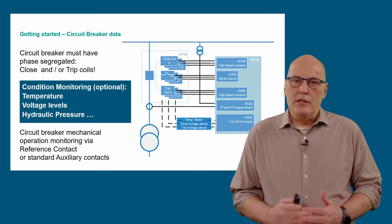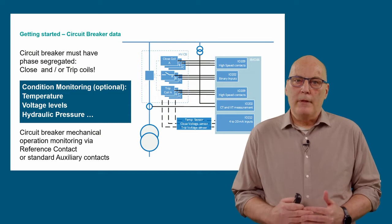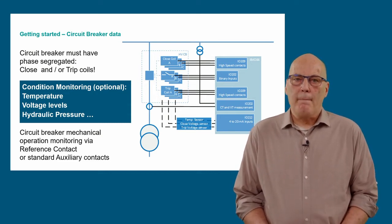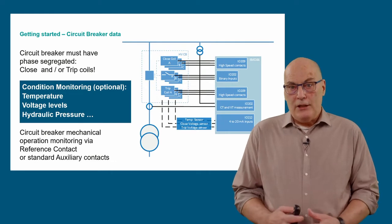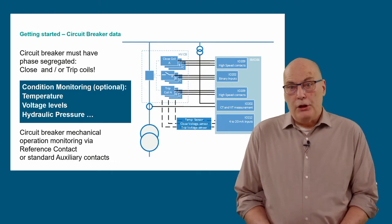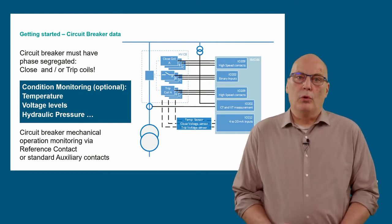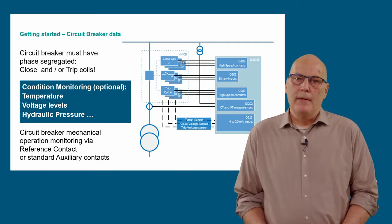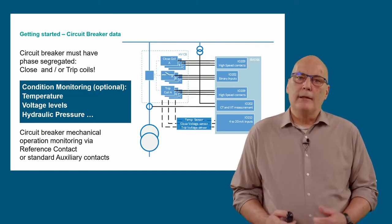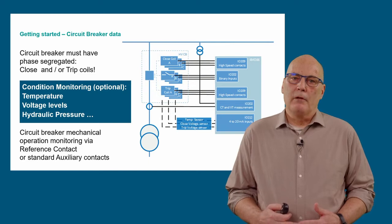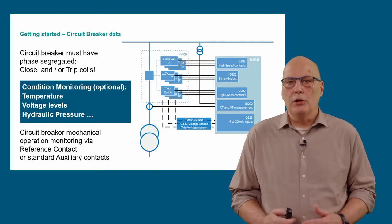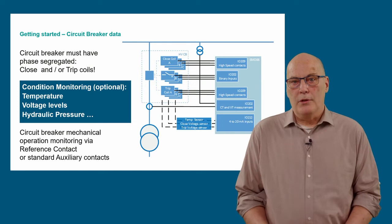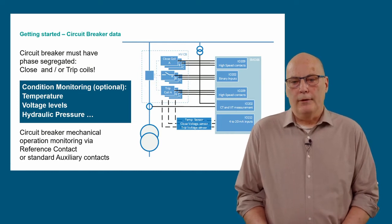This phase-selective connection of the closing and/or trip contacts is a must for the point-on-wave application. The mechanical circuit breaker position during switching can be obtained with standard auxiliary contacts via binary inputs. If the breaker has a reference contact with more accurate switching position status, this can also be implemented via transducer input on the IO 212 module. If conditions such as ambient temperature, hydraulic pressure, or control voltage have an impact on response time, this may be compensated in the point-on-wave function via transducer inputs.